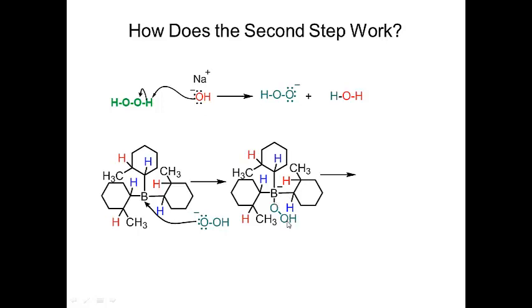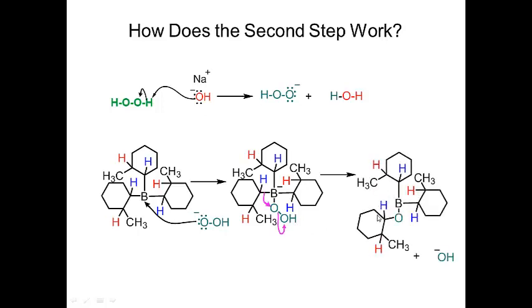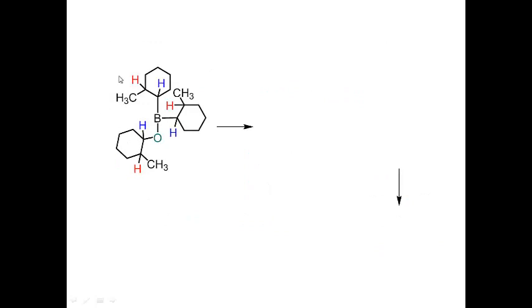Oxygen is now attached to boron. What happens next is a shift — the boron-carbon bond shifts to oxygen. The old oxygen-oxygen bond breaks, giving OH minus, and a new B-O bond forms. Follow the arrows — it's all logical. The boron-carbon bond broke and attacked oxygen, the O-O bond broke, and we ended up with OH minus and a new B-O bond.